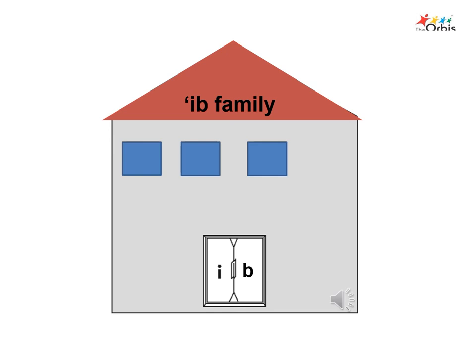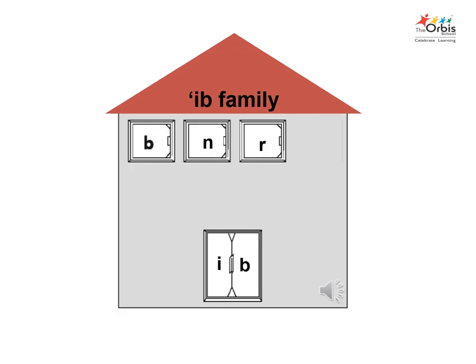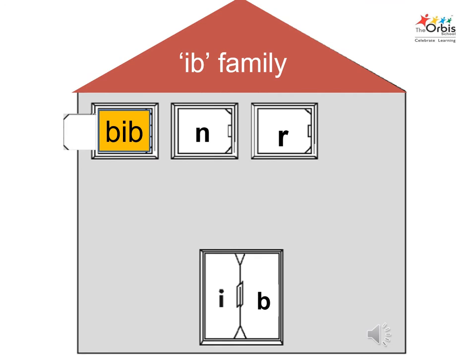Ebb family. They live in a beautiful house. There are three members in the ebb family. We will meet them one by one. Each family member has a room with a window.